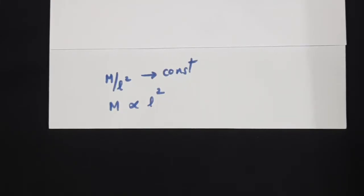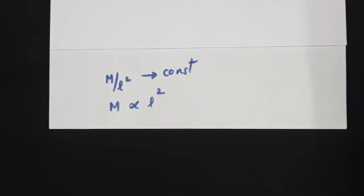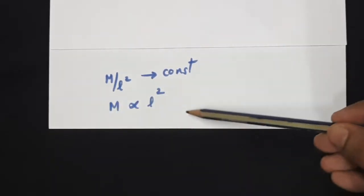We will correlate this part of the experiment with the first and second aims, where we found that M by L square is a constant for a given mode of vibration. From this relation, we can interpret that mass, or weight, is directly proportional to L square. This will be the basic concept we will use in finding out the relative density of a solid as well as the relative density of a given liquid.